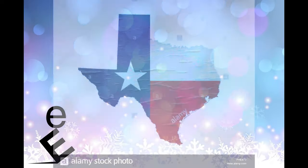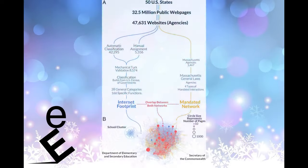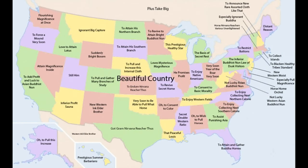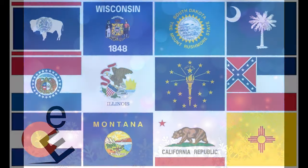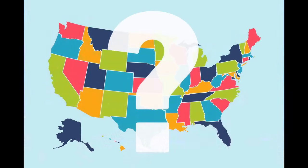States are divided into counties or county equivalents, which may be assigned some local governmental authority but are not sovereign. County or county equivalent structure varies widely by state, and states may also create other local governments. State governments are allocated power by the people through their individual constitutions. All are grounded in Republican principles, and each provides for a government consisting of three branches, each with separate and independent powers: executive, legislative, and judicial.